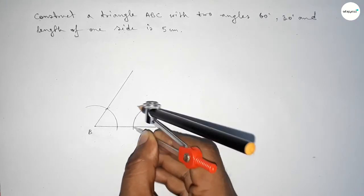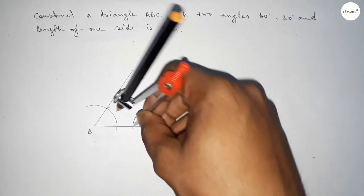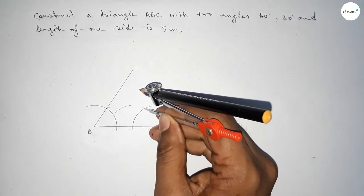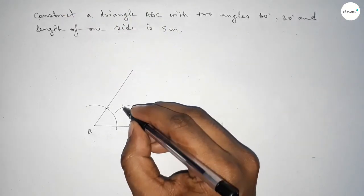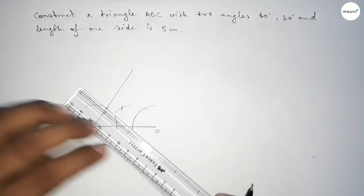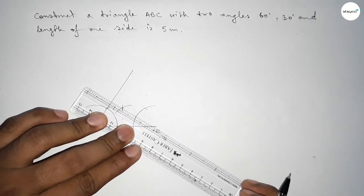Putting the compass here and cut here and drawing an arc here, and putting the compass here with same length and cut here. So both the curves intersect at a point. Now first joining this line to get here a 30 degree angle.